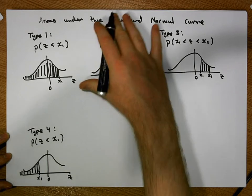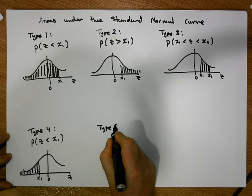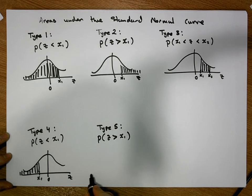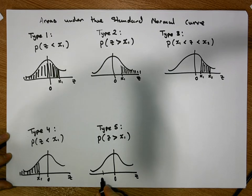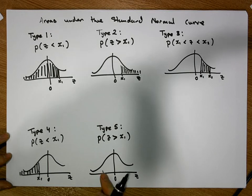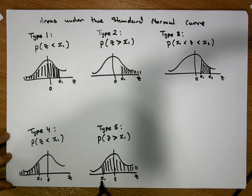The next type of area is similar to the type 2 areas but where x1 is negative, and we call this a type 5 area. So the type 5 area is the probability of observing a z score greater than x1, where x1 is a negative value placed to the left-hand side of zero. We're interested in the area under the curve to the right-hand side of x1, because that's where all the z scores greater than x1 reside.